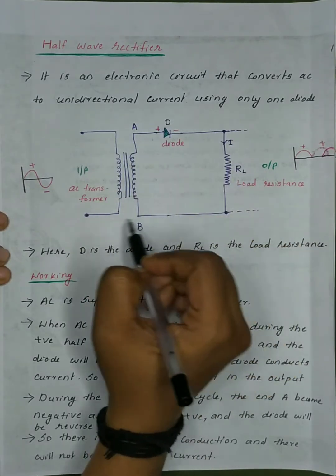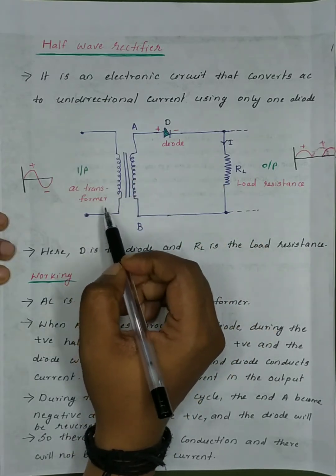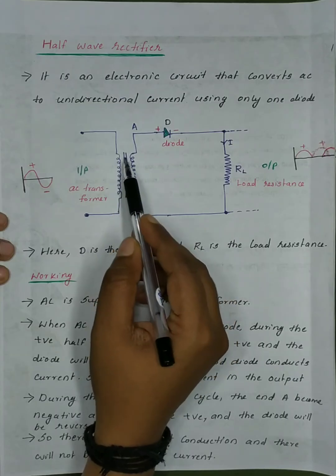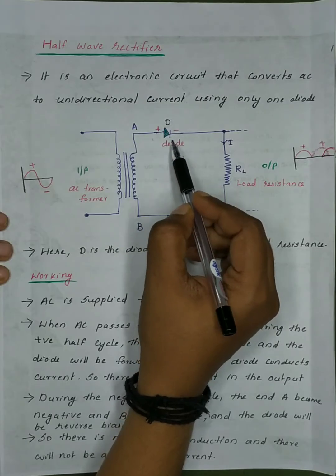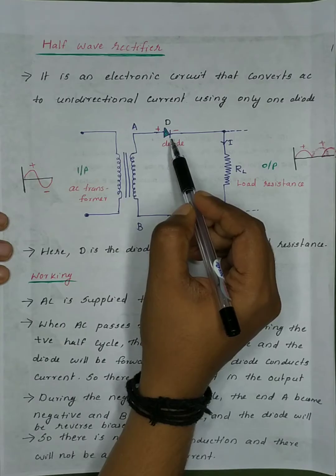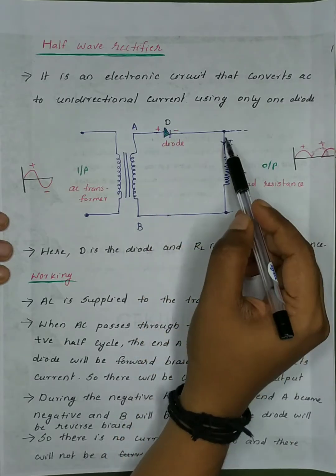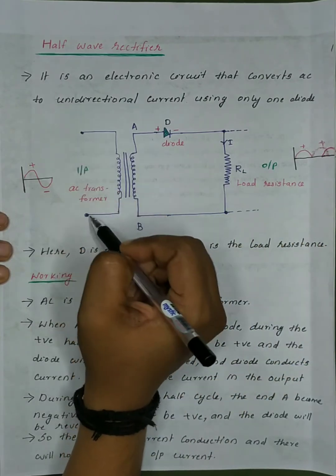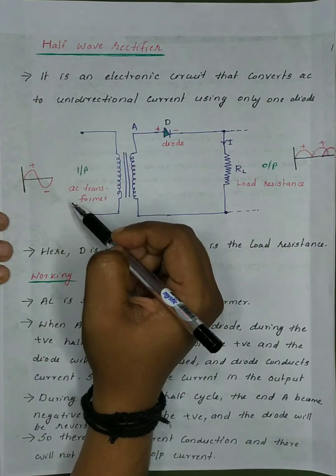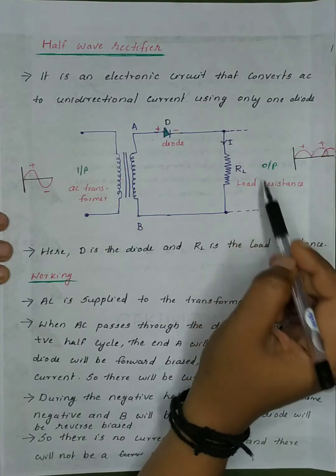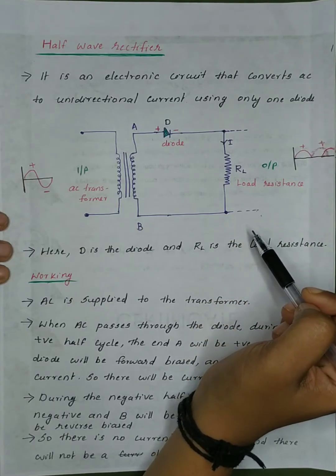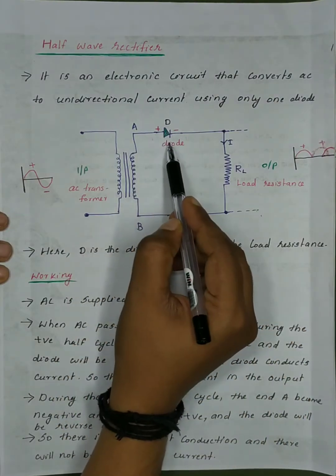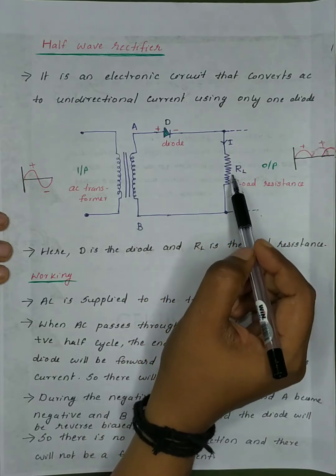This is the circuit diagram. We have an AC transformer. We use a diode and a load resistance. We apply the input at these two points and measure the output at these two points. D is the diode and RL is the load resistance.